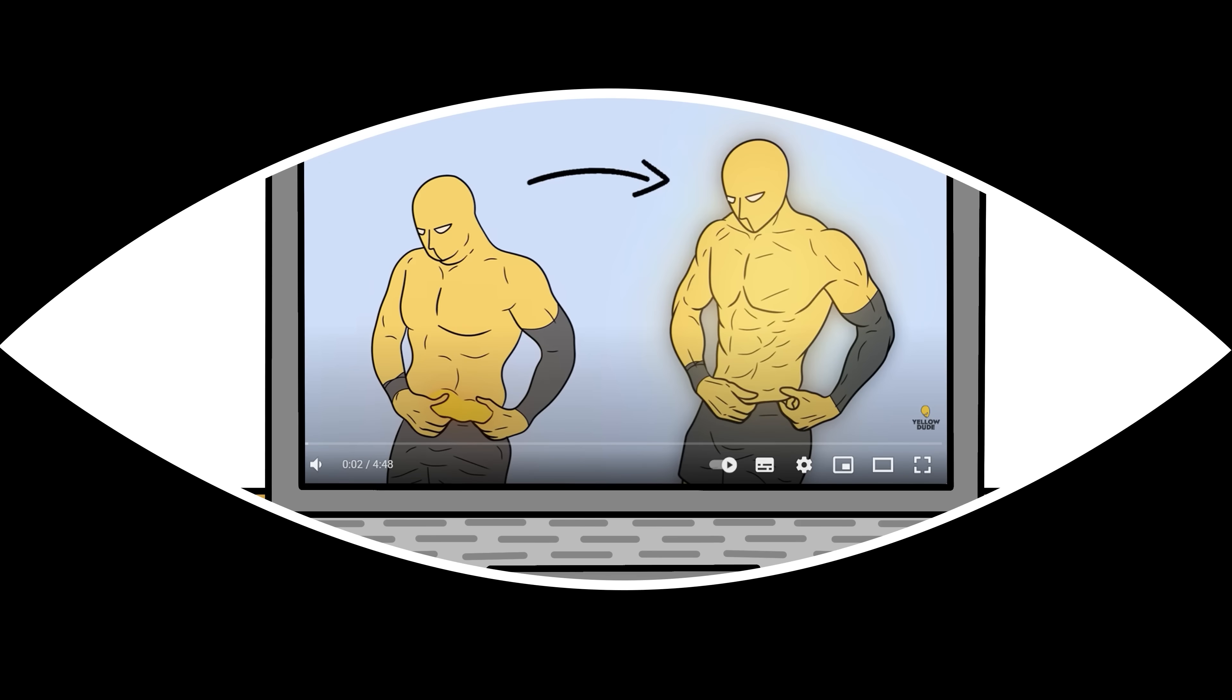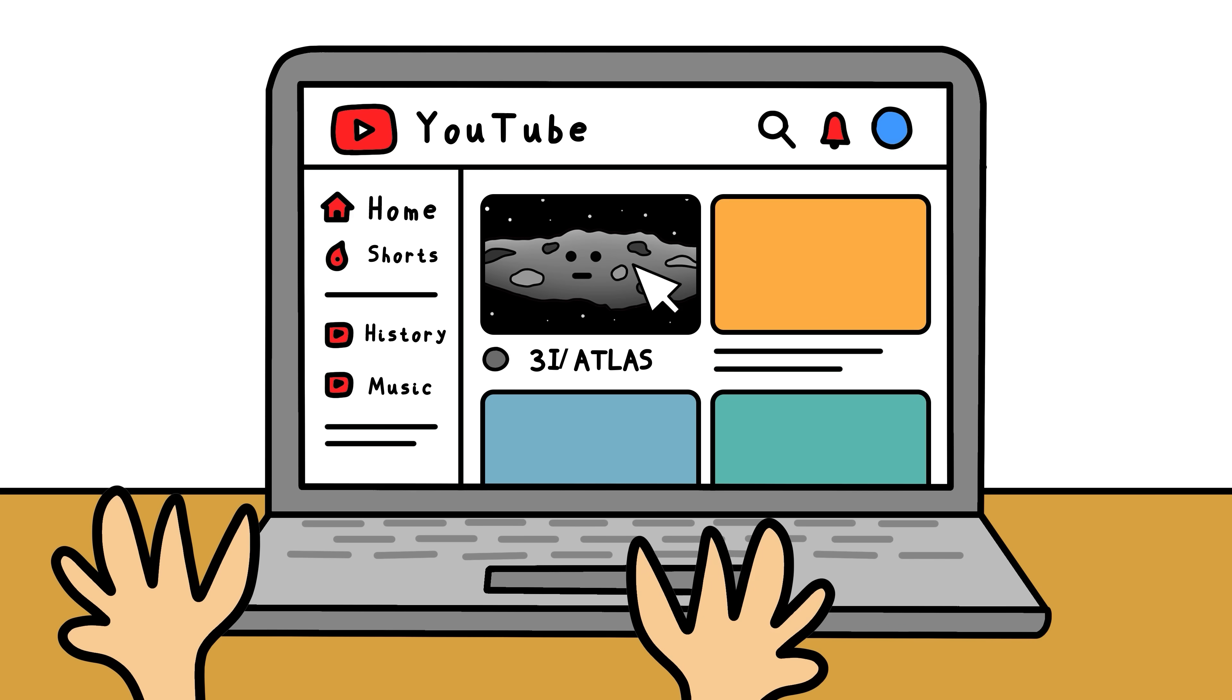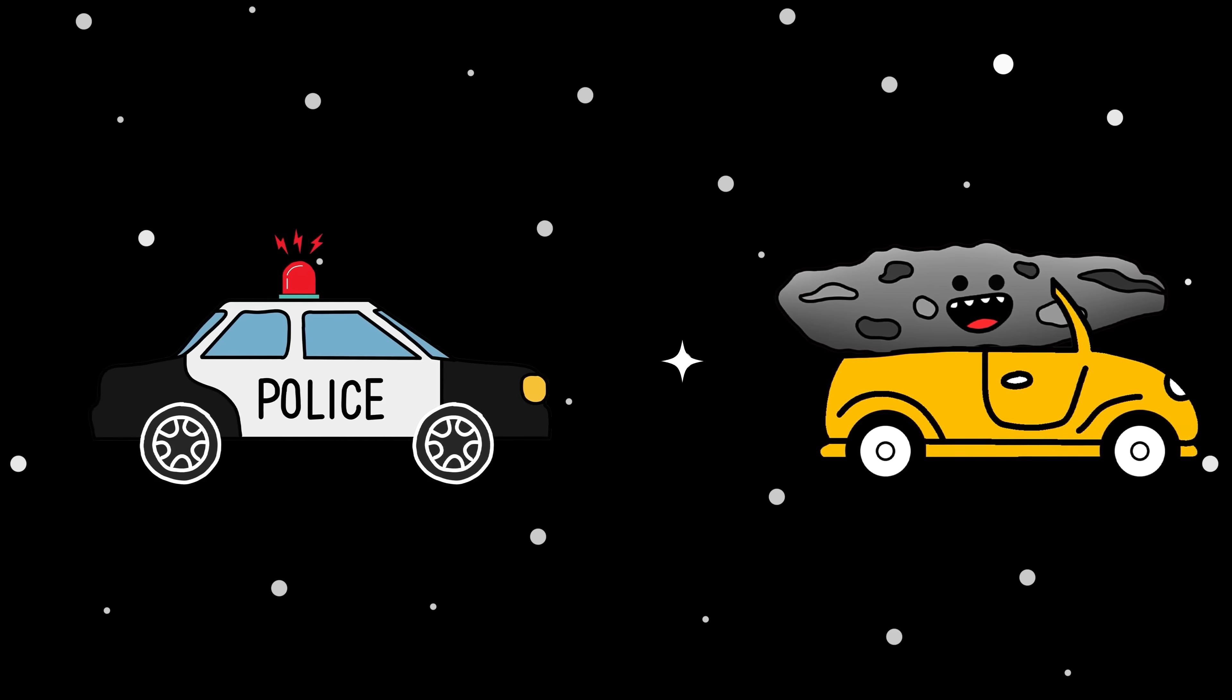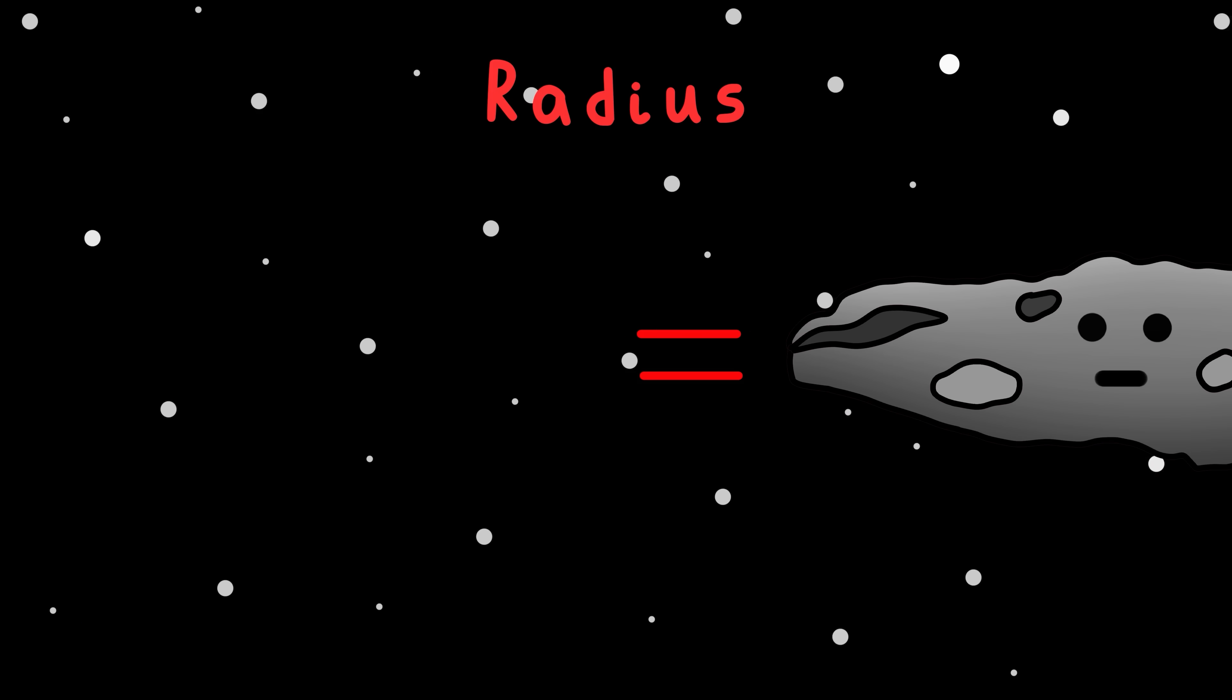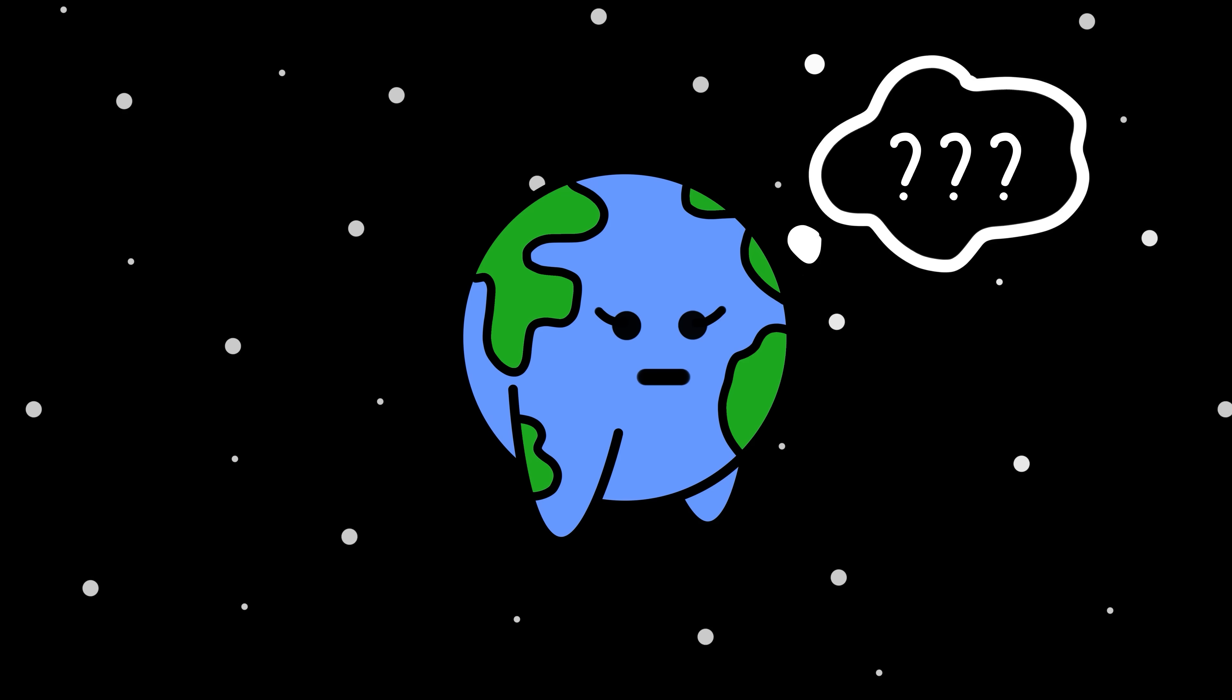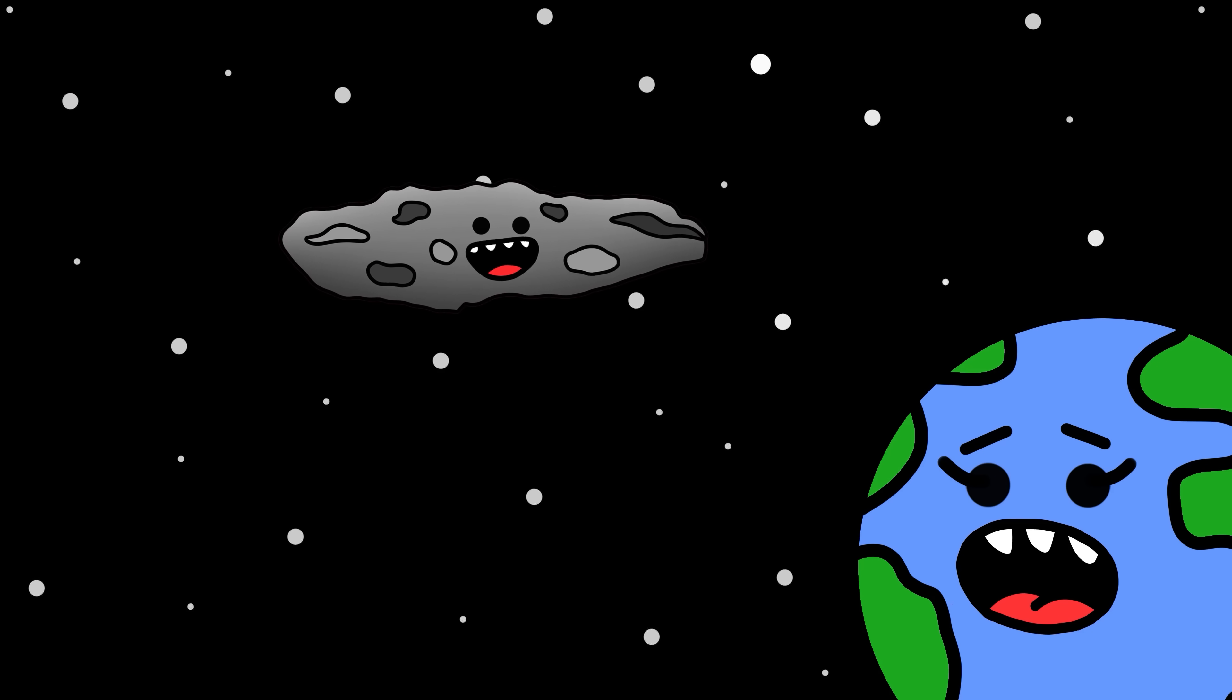You're watching your daily dose of YouTube videos when all of a sudden you see something on your home page. Wait, 3i/Atlas? The fastest interstellar object ever entered our solar system? It was an asteroid two times bigger than the one that struck the dinosaurs 65 million years ago. What if it actually hits us?